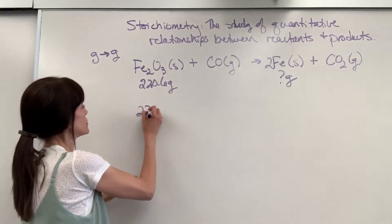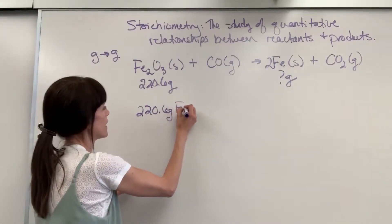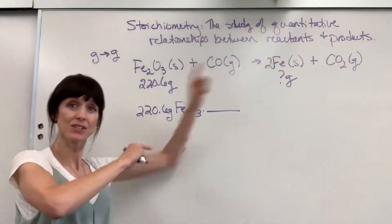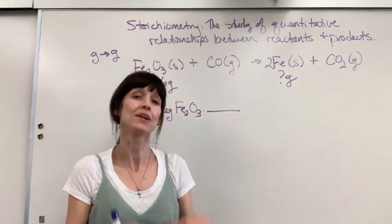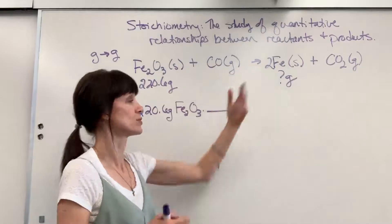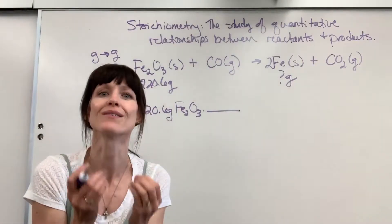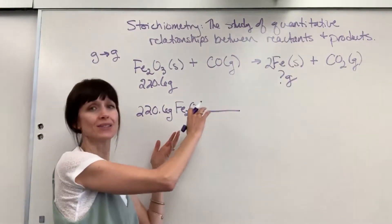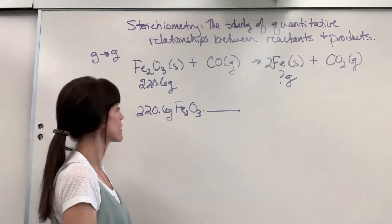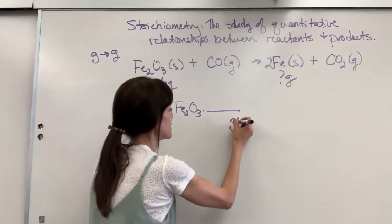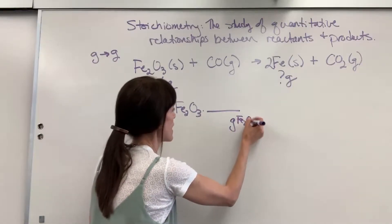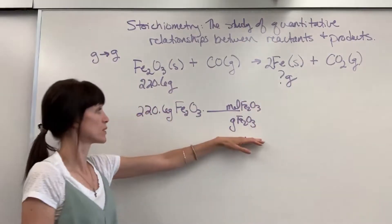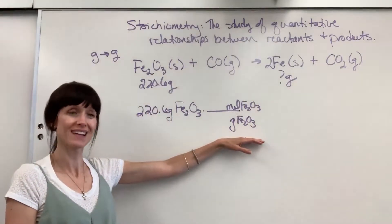We've got 220.6 grams of the iron 3 oxide. I eventually want to get to this iron, and I know the way I go from one compound to another one is the molar ratio. That means this has to be in moles. So I bring it to moles using molar mass. We are going to have grams of the iron 3 oxide and moles of the iron 3 oxide. Notice I put the grams in the denominator so it will cancel.